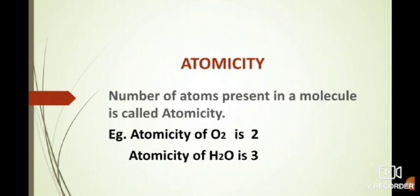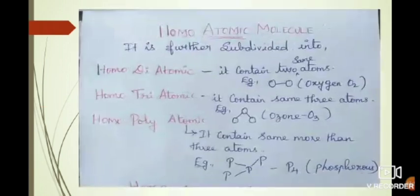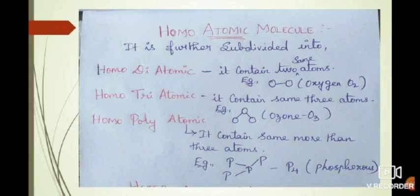Atomicity means how many atoms are present in a molecule. Based on atomicity, the homoatomic molecule is again subdivided into homo-diatomic molecule, homo-triatomic molecule, and homo-polyatomic molecule. Homo-diatomic means it contains two same atoms — for example, oxygen O2, which contains two O atoms.